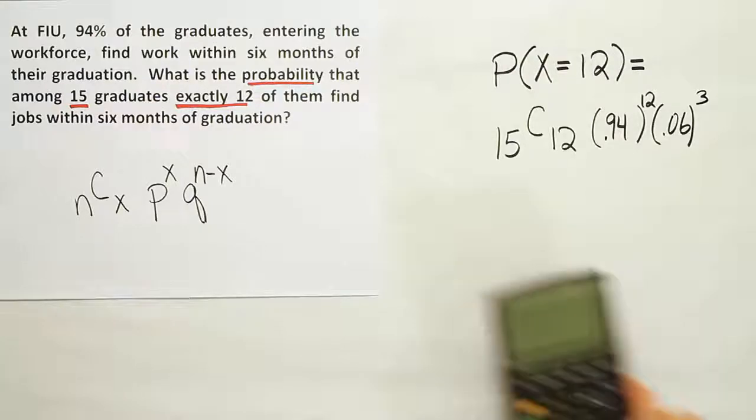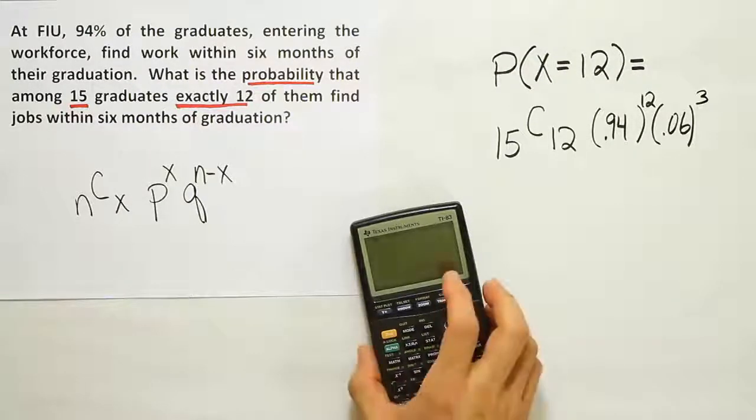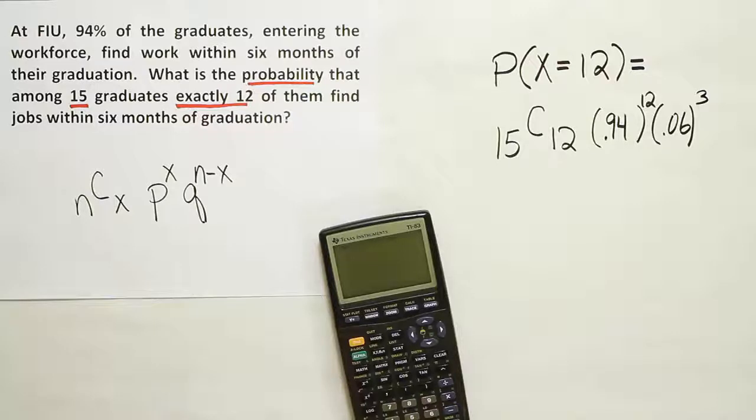The rest of it is just calculator work. So let's go ahead and do that. 15 choose 12 can be worked out pretty easily by hand, but we're going to just go ahead and do that in our calculator to speed it up. That ends up being 455.